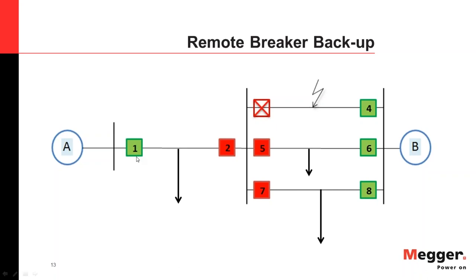The first disadvantage is that the strength of sources might lead to an underreach. For example, if source A is weak and cannot sense the fault between Breaker 3 and Breaker 4, it will not trip even after the coordination delay. The second disadvantage is coordination delay — it may be too long before the relay at Breaker 1 decides to trip, and for a serious fault this could destabilize the grid.